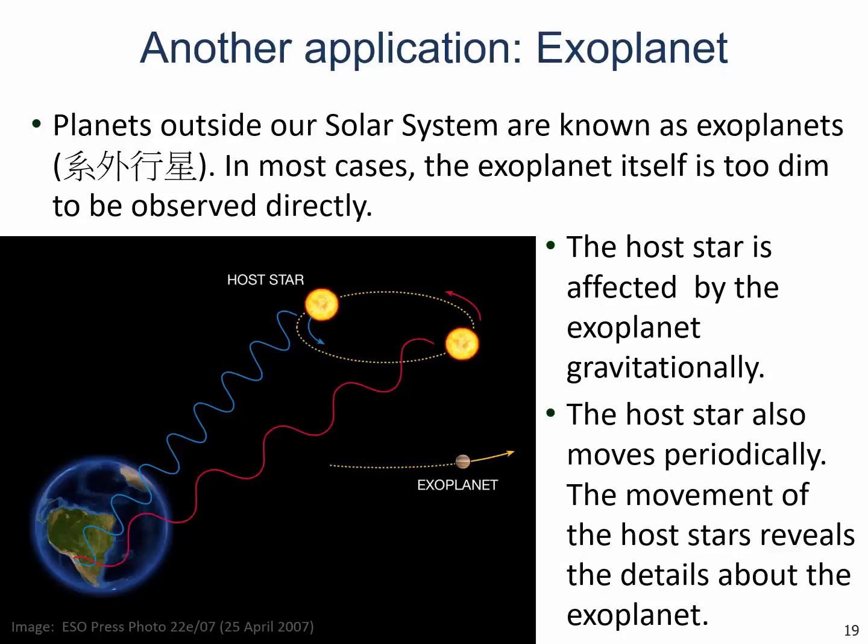Another application is exoplanets — planets outside our solar system. In most cases, an exoplanet is too dim to observe directly because of its small size, large distance, and because it is much dimmer than its host star. However, the host star is affected gravitationally by the exoplanet. Therefore, we can observe the host star to see its periodic motion to reveal the existence of the exoplanet.